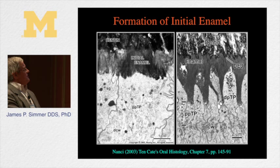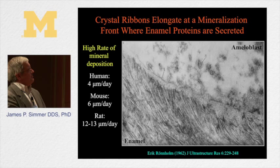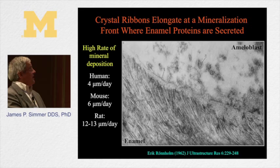The initial enamel is laid down, and after a short amount of rodless enamel, Tomes' processes form, creating the rod pattern superimposed on dental enamel formation. The whole process of making enamel crystals occurs right next to the ameloblast membrane. There's a mineralization apparatus along the membrane, and the enamel mineral ribbons are elongated right at the ameloblast membrane. These cells keep backing up as the enamel layer gets thicker and thicker.